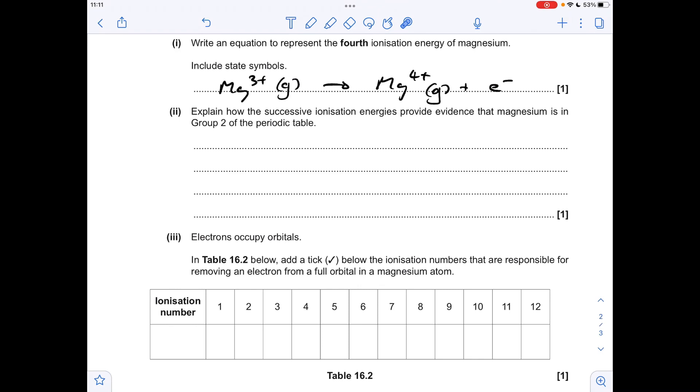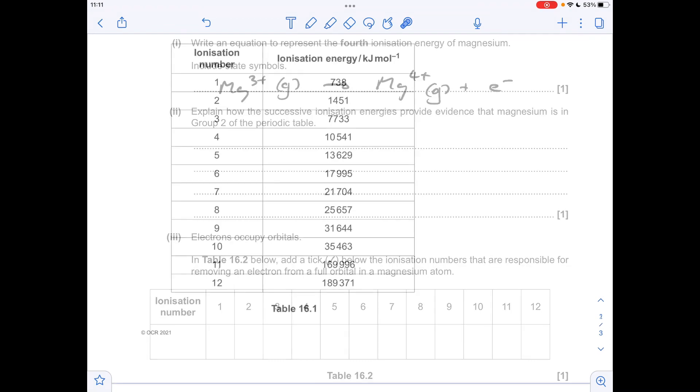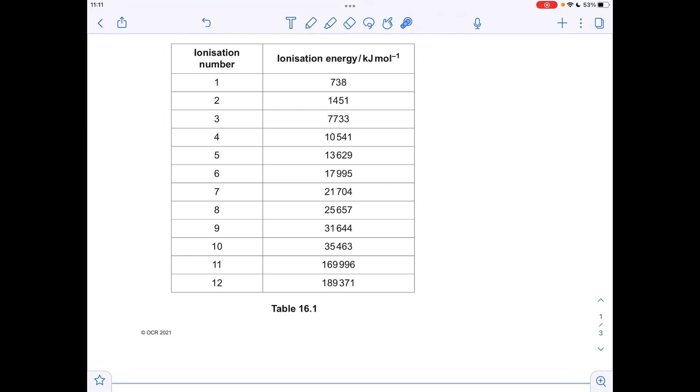Next part, we're going to use the table on the page before to explain how the successive ionization energies provide evidence that magnesium is in group two of the periodic table. So we're looking for the first significant jump or rise in ionization energy. And that occurs between the second and the third.